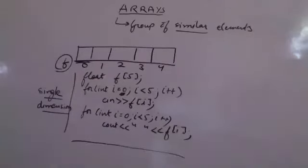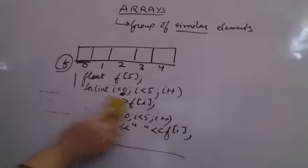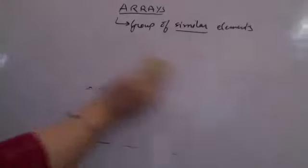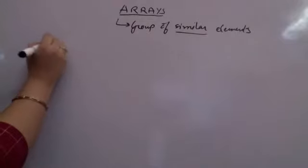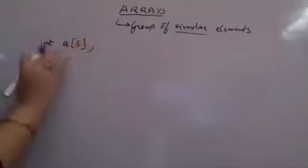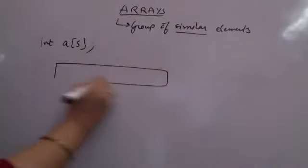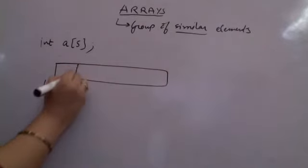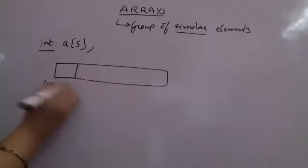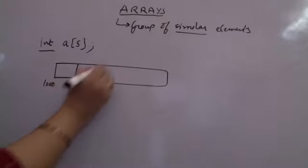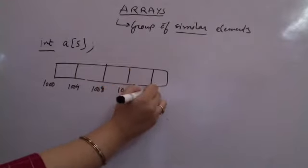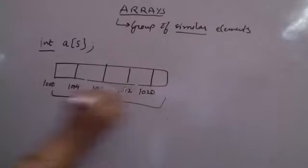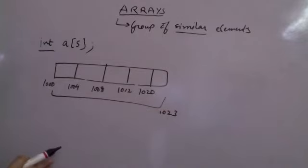Now, how is the list stored in memory? If I declare integer A[5], what happens in memory is there is a memory space starting from address 1000. Since it is an integer on a 32-bit compiler, it takes 4 bytes. So the next address is 1004, then 1008, then 1012, and the final address is 1020. The array spans from 1000 to 1023.